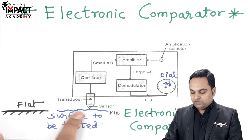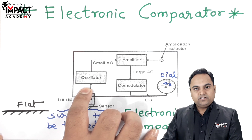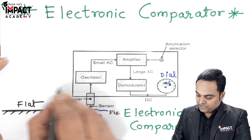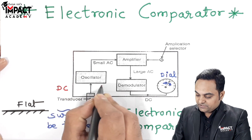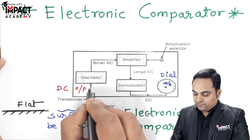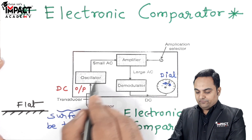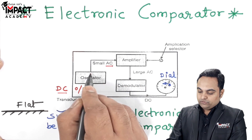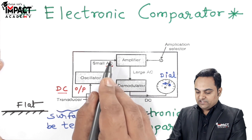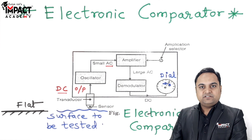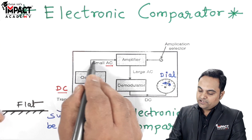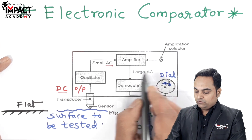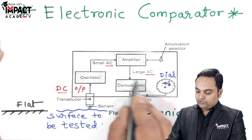The transducer will convert the displacement into electrical energy — that is, it would be converting the variation and the output of this transducer would be DC voltage. The DC output is given from the transducer to the oscillator. The oscillator will convert this DC voltage into an AC supply, which is sent to the amplifier. The output of the oscillator is a small AC — the oscillator also indicates the frequency of the voltage — and this small amount of AC is fed to the amplifier, which converts the small AC into a large AC, and then it is fed to the demodulator.